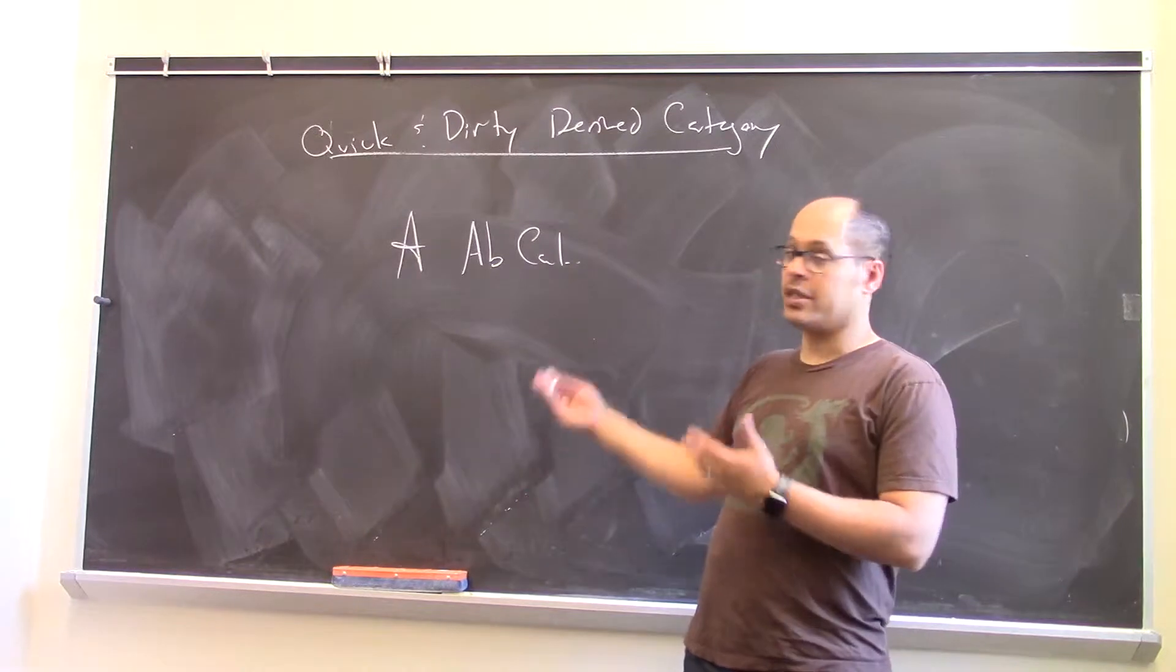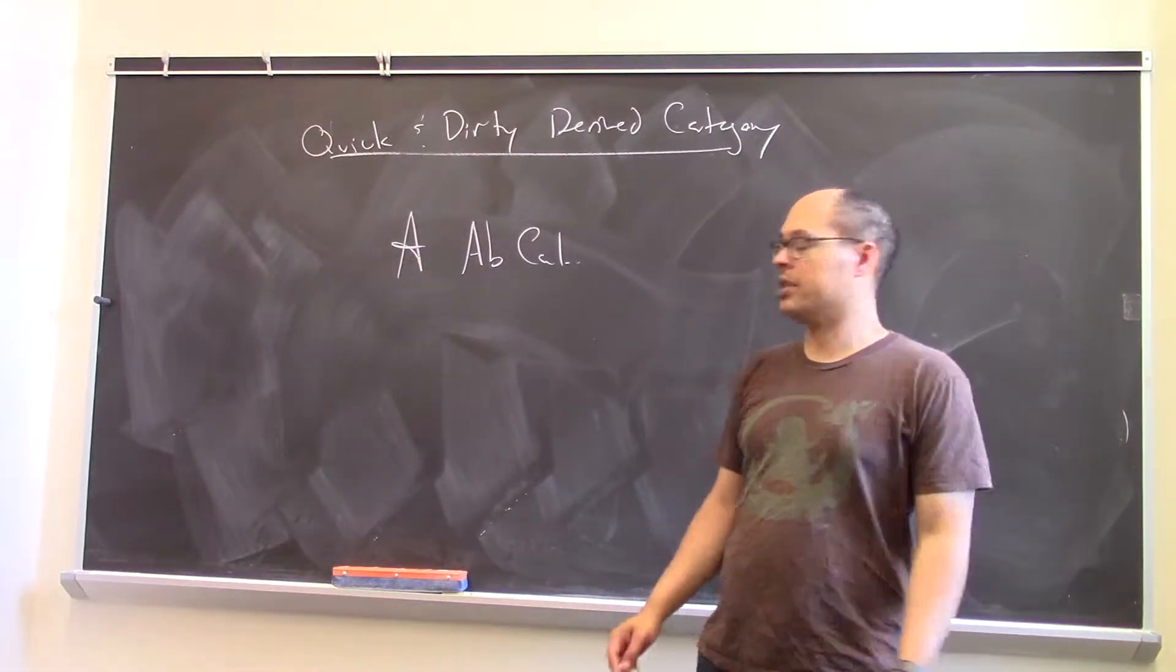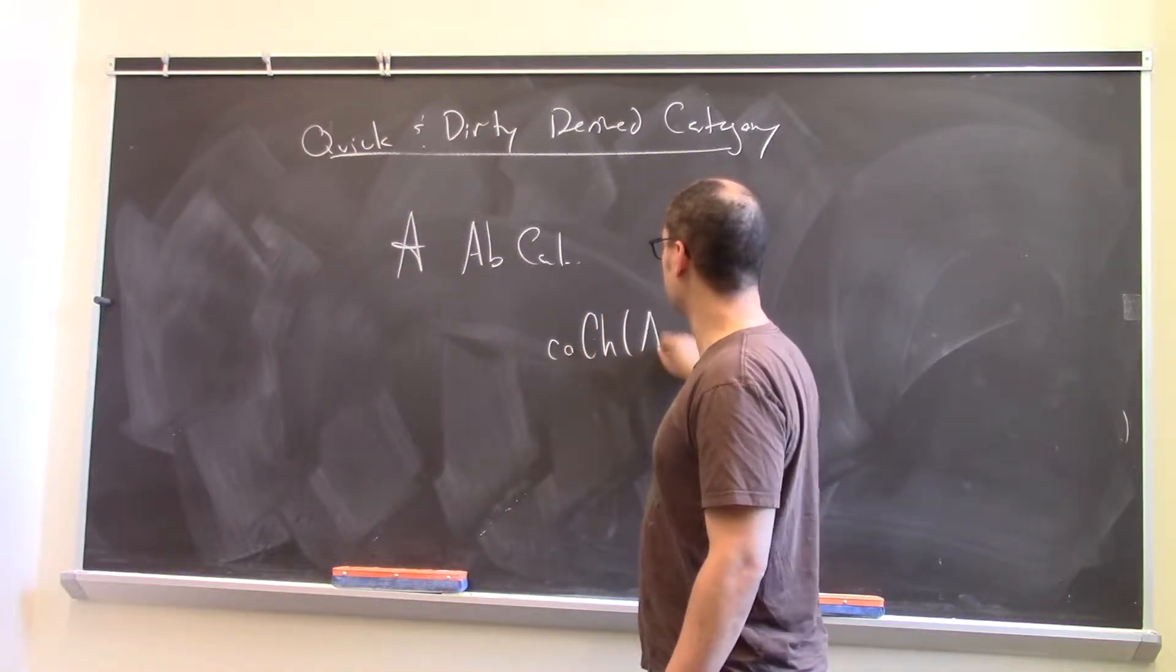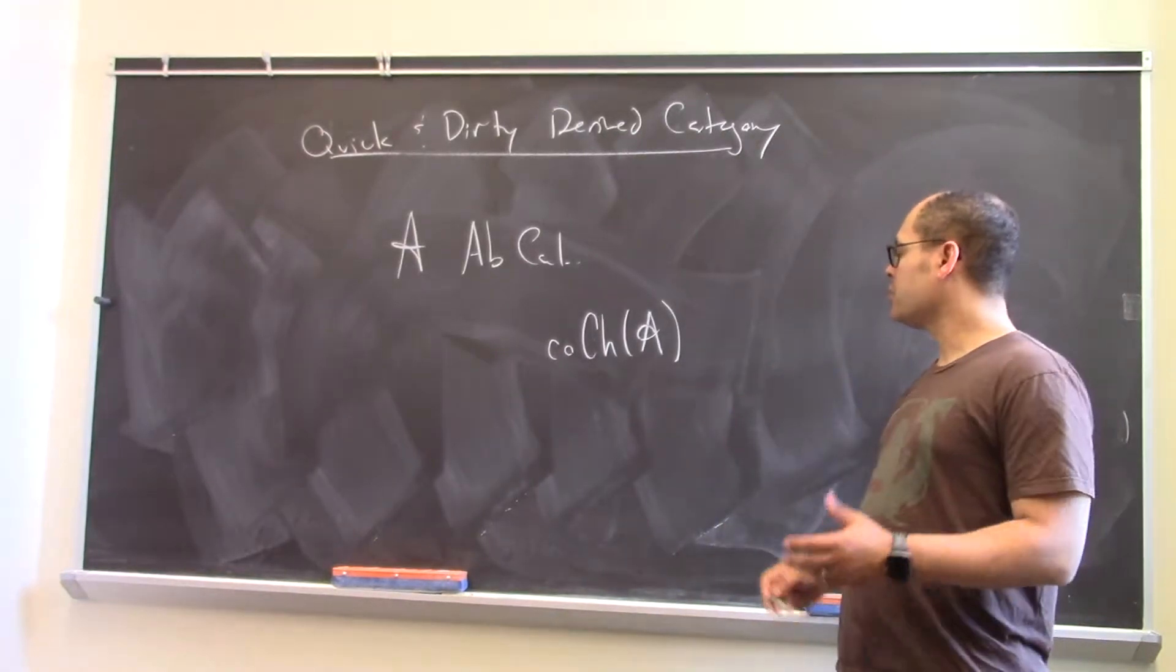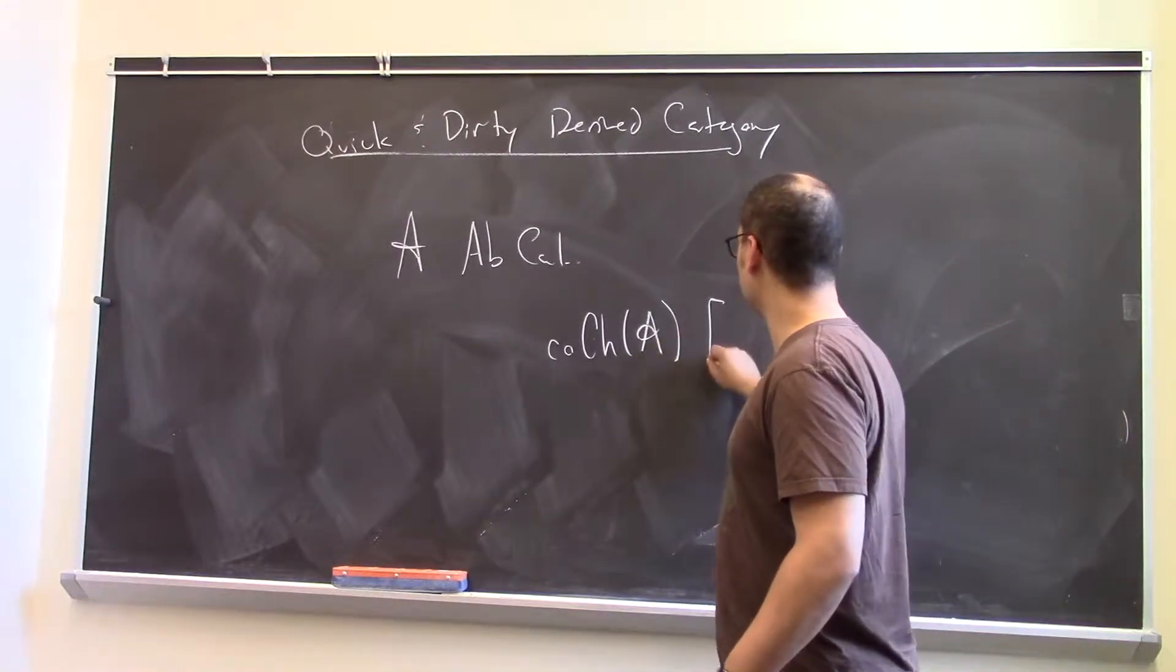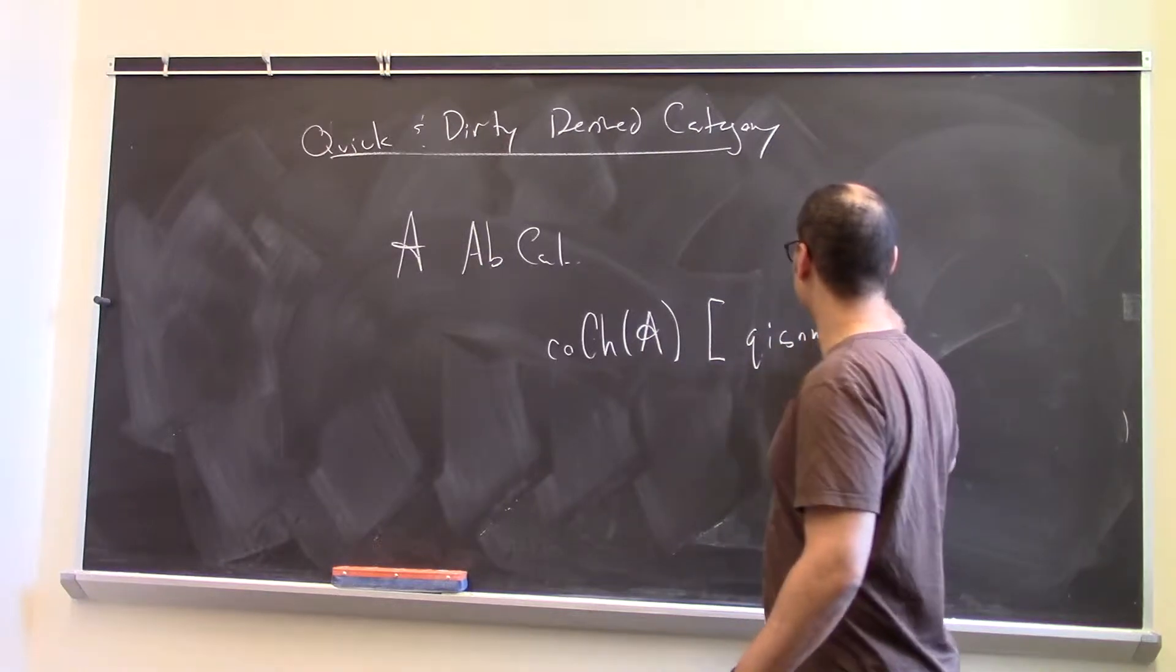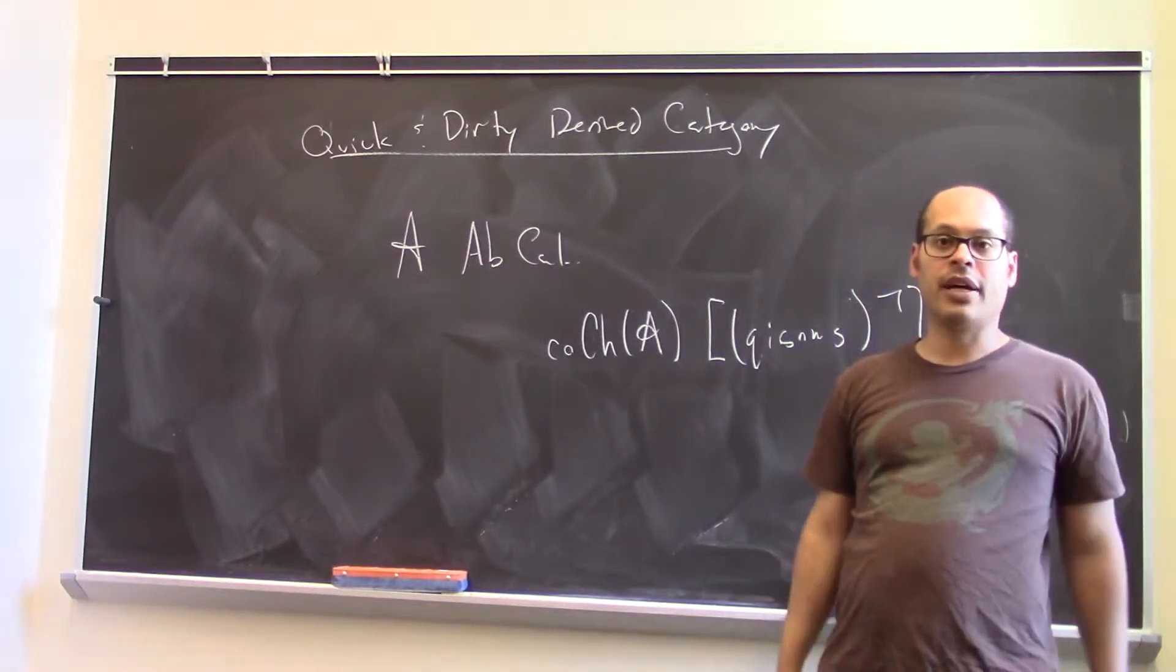So, somebody gives you an abelian category and they say, what's the derived category? The answer is, you just take the category of cochain complexes, which is yet another abelian category, and some of the morphisms are quasi-isomorphisms, and you just invert those. So you invert the class of quasi-isomorphisms. And that's the derived category.